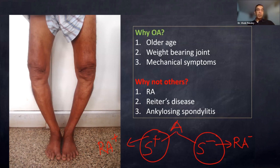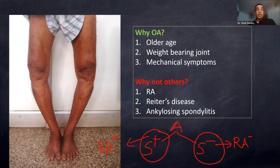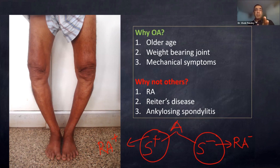Before you see ankylosing spondylitis affecting the knee, the hip and spine would have become like bamboo. The predominant complaint is back pain — they don't come with knee pain. Ankylosing spondylitis is also a disease of young patients, typically 20 to 50 years old. You cannot diagnose it in a 62-year-old presenting for the first time. Their pain is more at rest than at activity.